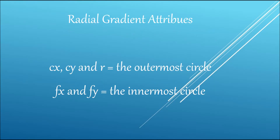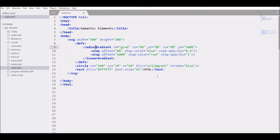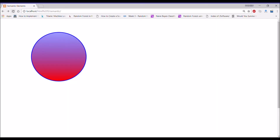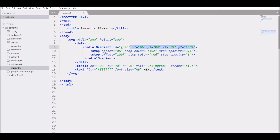Let's start with radial gradient. Radial gradient has attributes CX and CY, which are the center point, and r is for radius which creates the outermost circle. Then fx and fy define the innermost circle. Let's change 'linear' to 'radial' and see how different it makes it — it's starting from the center now.